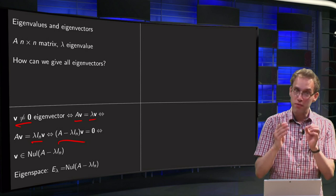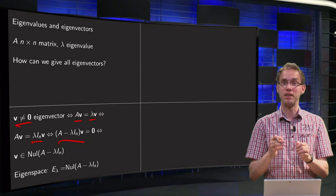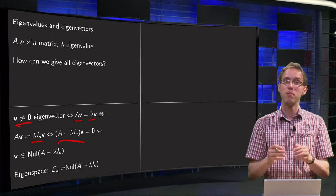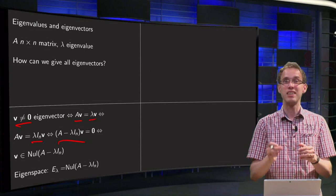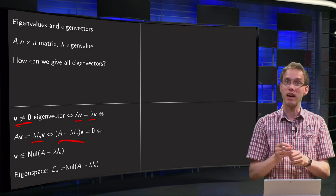So we see that if v is an eigenvector, then A minus lambda times In times v equals the zero vector. But what does it say here? It says that v is in the null space of the matrix A minus lambda times In.